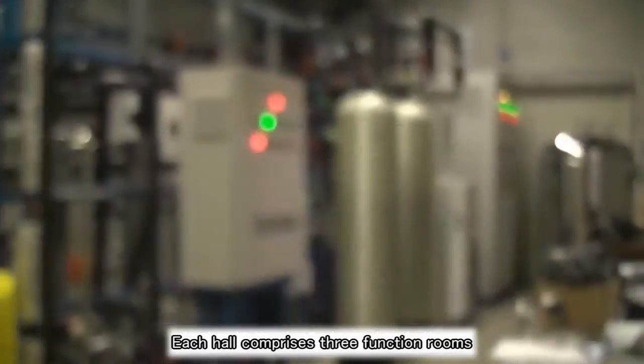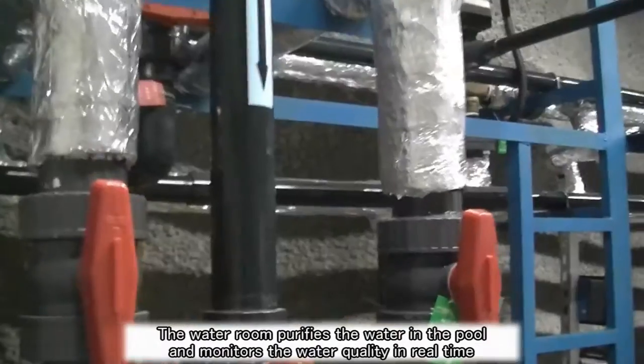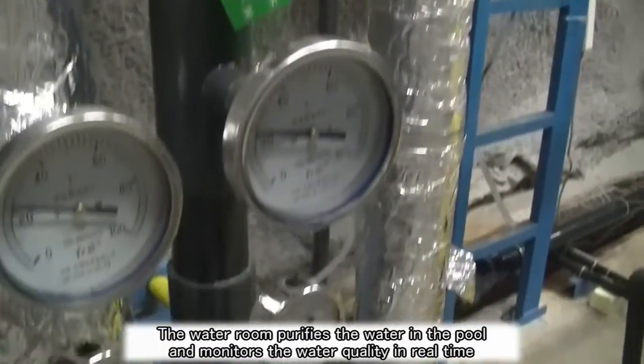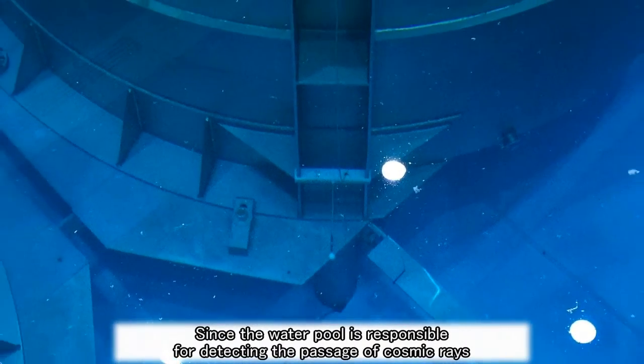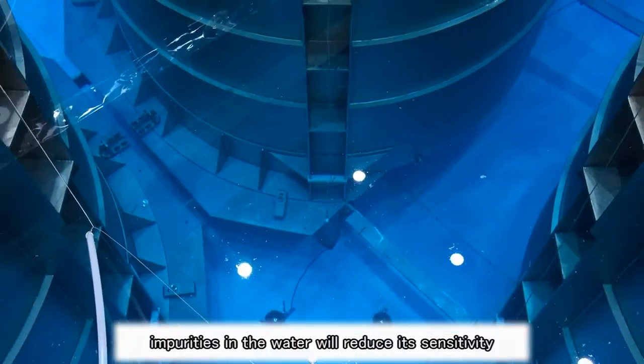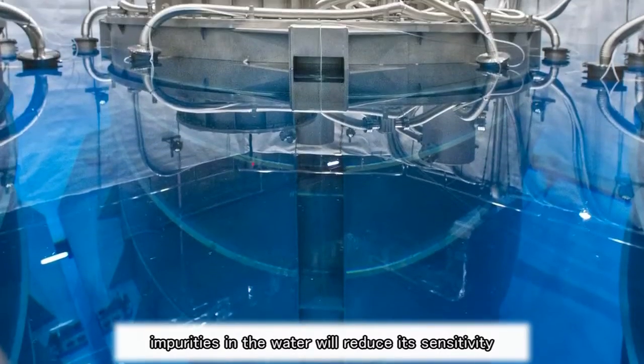Each hall comprises three function rooms. The water room purifies the water in the pool and monitors the water quality in real time. Since the water pool is responsible for detecting the passage of cosmic rays, impurities in the water will reduce its sensitivity.